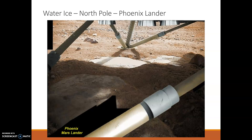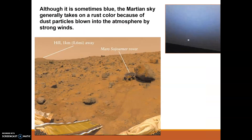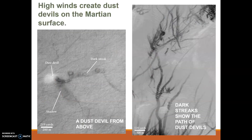Since there is water vapor in the atmosphere, it is believed that there is frozen water or water available on Mars, which is another big area of speculation. Although sometimes the Martian sky is blue, it takes on a rust color because of dust particles blown into the atmosphere by strong winds. The rock on Mars has a very nice rust color to it. These high winds also create dust devils on the Martian surface — kind of like wind storms that bring dust up into the atmosphere.